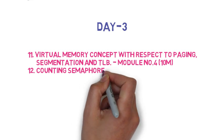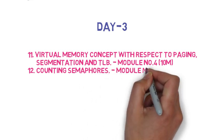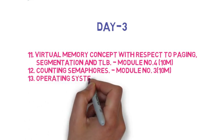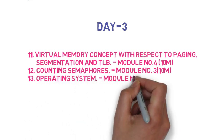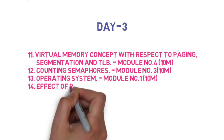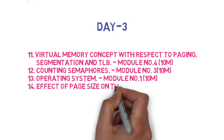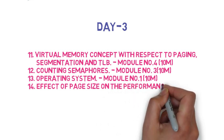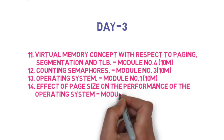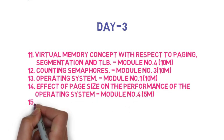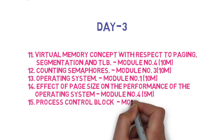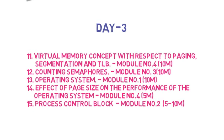The thirteenth question is: explain operating systems — its various functions and objectives. You need to explain the OS and write out its functions, such as file management including read, write, copy, and move operations. The fourteenth question is the process control block (PCB) diagram, which can come for 5 to 10 marks.